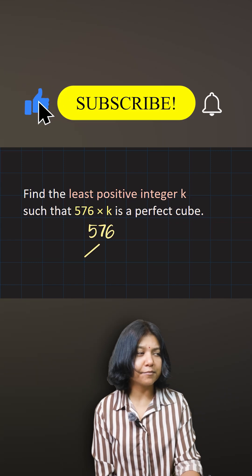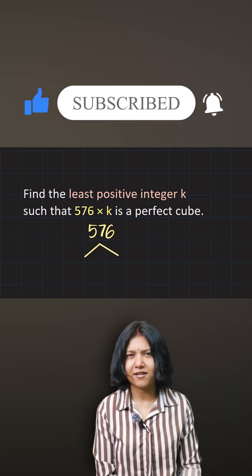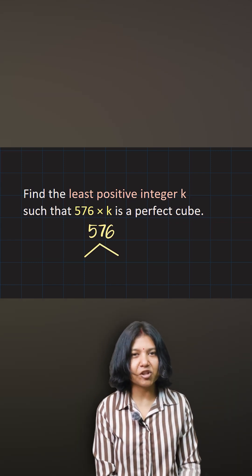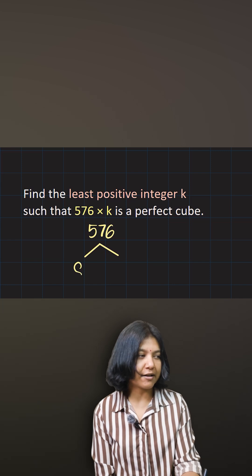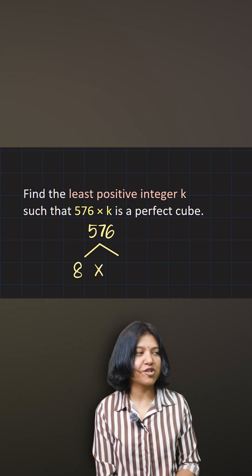Cube of 1 is 1, so I'm not going to consider that. Cube of 2 is 8, so I'll multiply by 8. 8 times how much is closest to 576? 8 times 7 is 56, and then 16. 8 times 2 is 16.